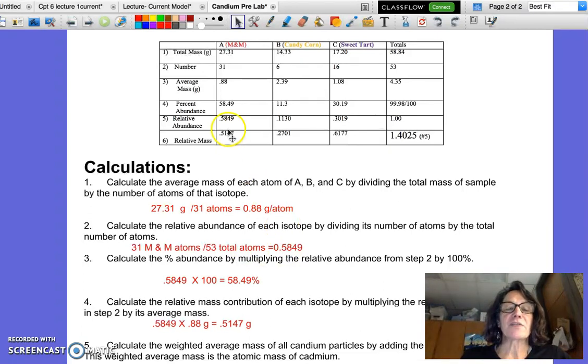The percent abundance, which is the line just above it here, is simply taking that relative abundance times 100. So whereas relative abundances should total one or close to one, my percent abundances should total 100 or very close to 100.